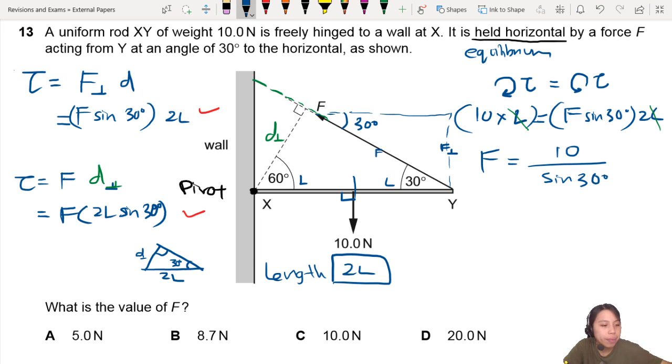That's left with 10 divided by... Oh, I forgot a 2 here. 2 sine 30. Thanks for pointing that out. My own brain. You should get about 10N for this. So that will be C.